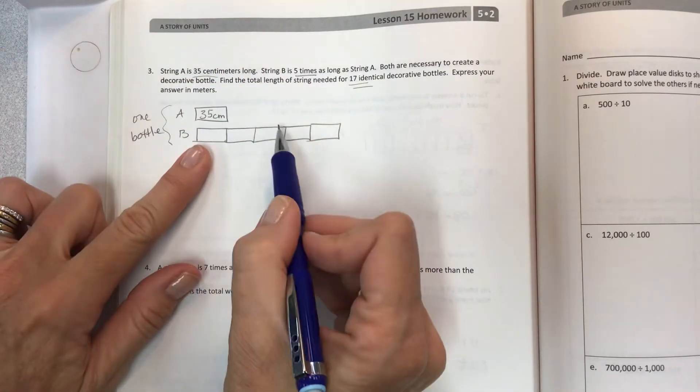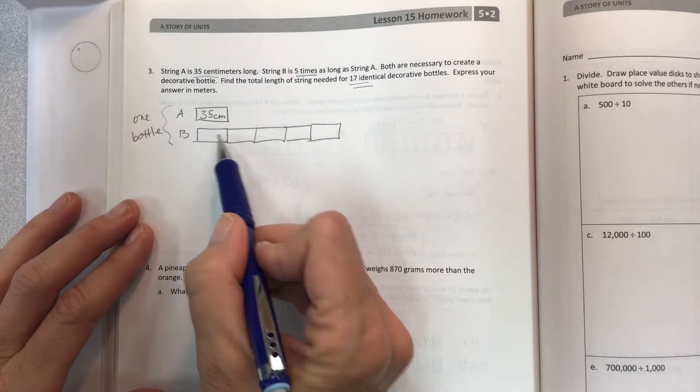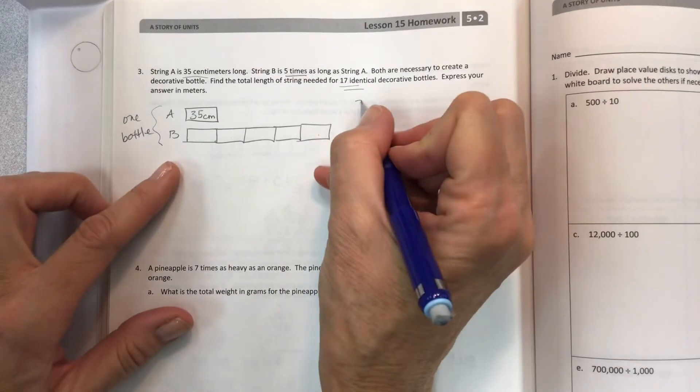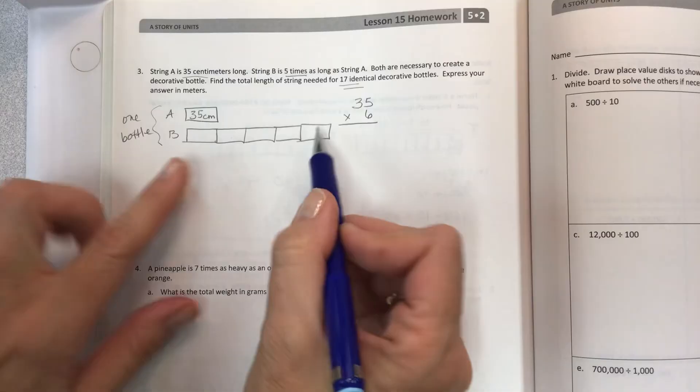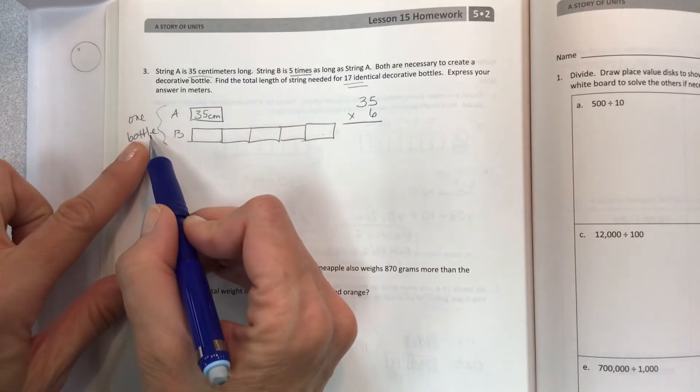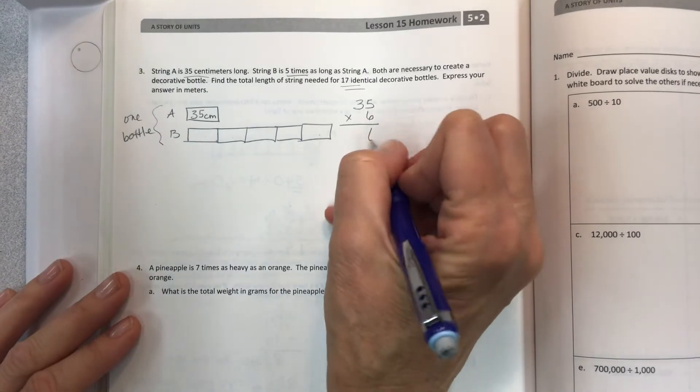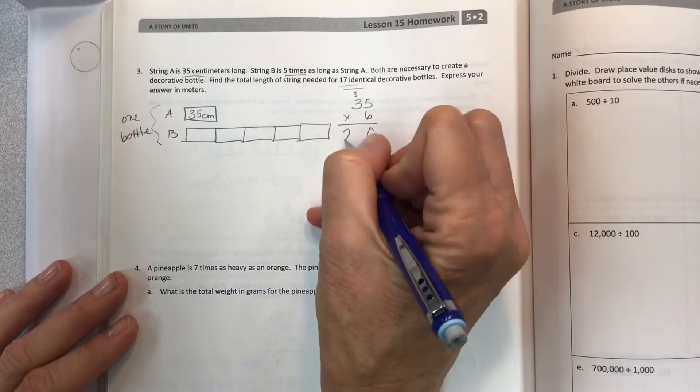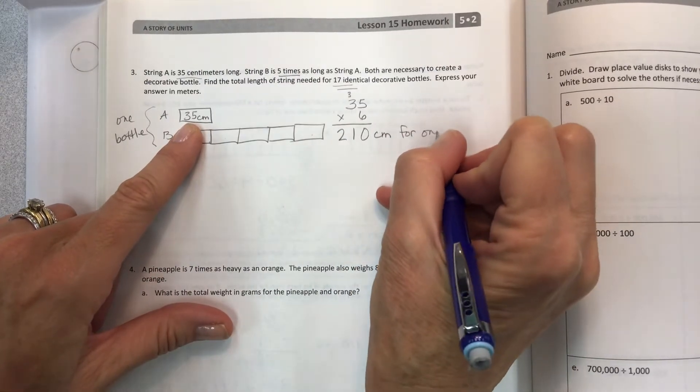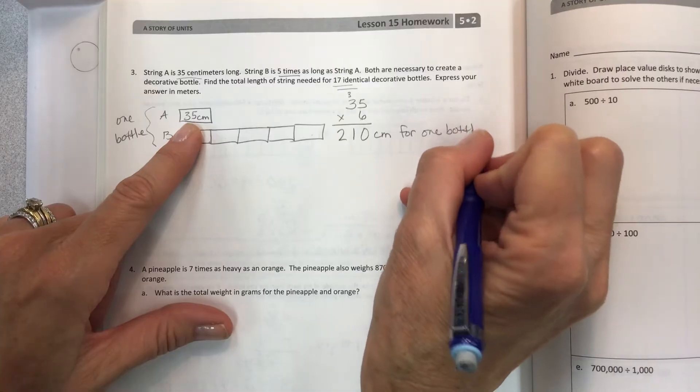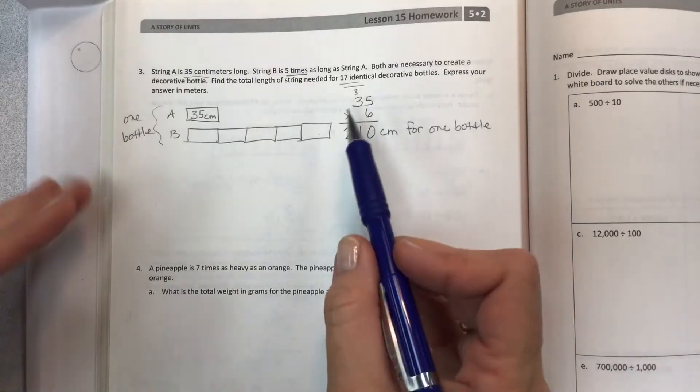Then what is the total string that I need for one bottle? And how can you figure that out? So how many squares are there here? 1, 2, 3, 4, 5, 6. So if you take the 35 and you multiply it by 6, you can find the total amount in centimeters of string needed for one bottle. So start out with that. 6 times 5 is 30. 6 times 3 is 18. 19, 20, 21. That's going to be centimeters for one bottle.